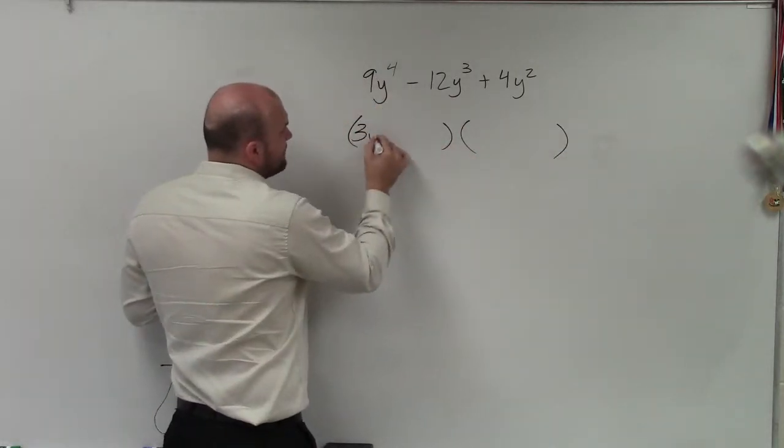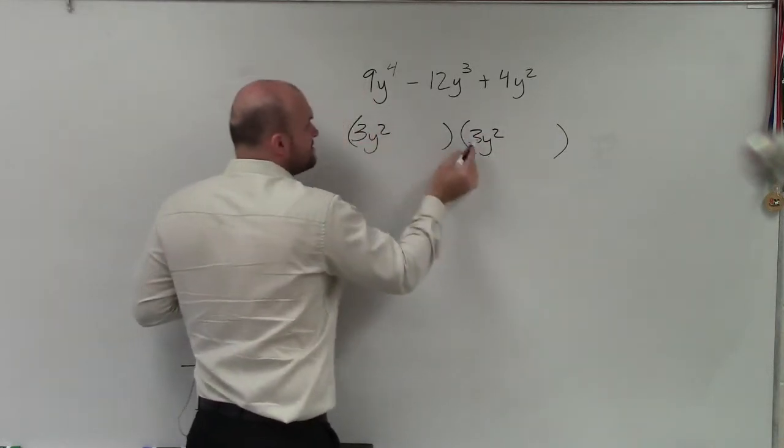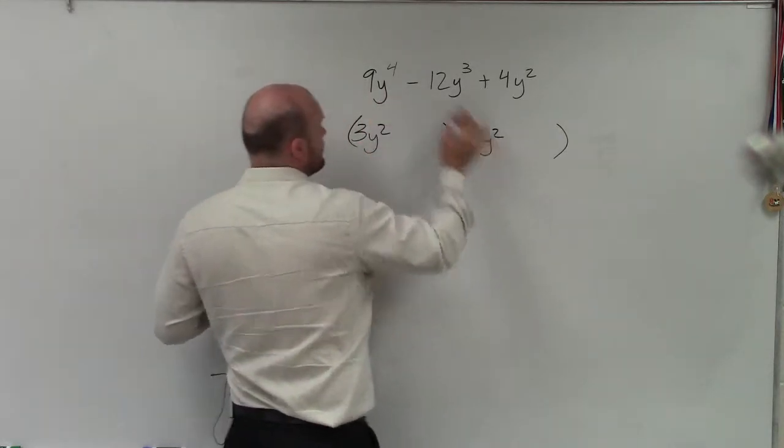Since these are squared numbers, I'd have to have 3y squared times 3y squared, right? 3 times 3 is 9. y squared times y squared is y to the fourth.